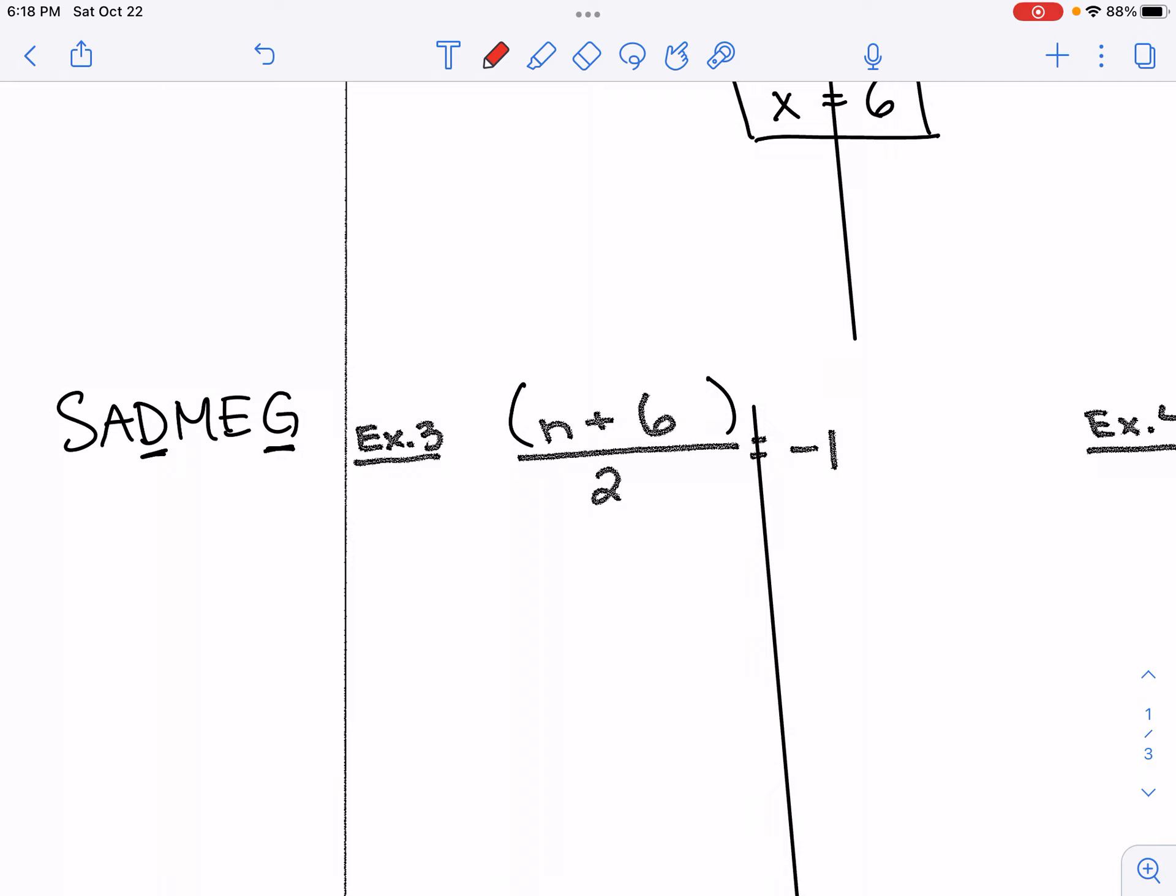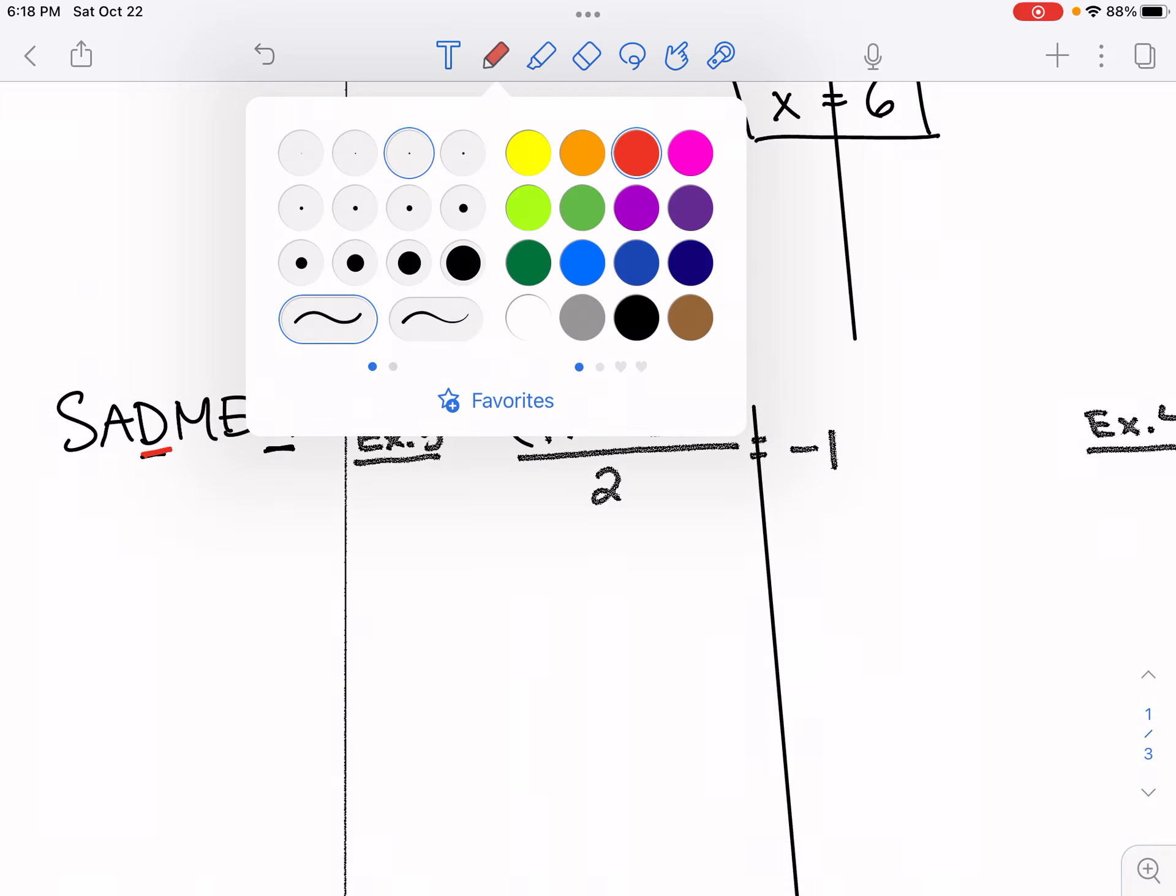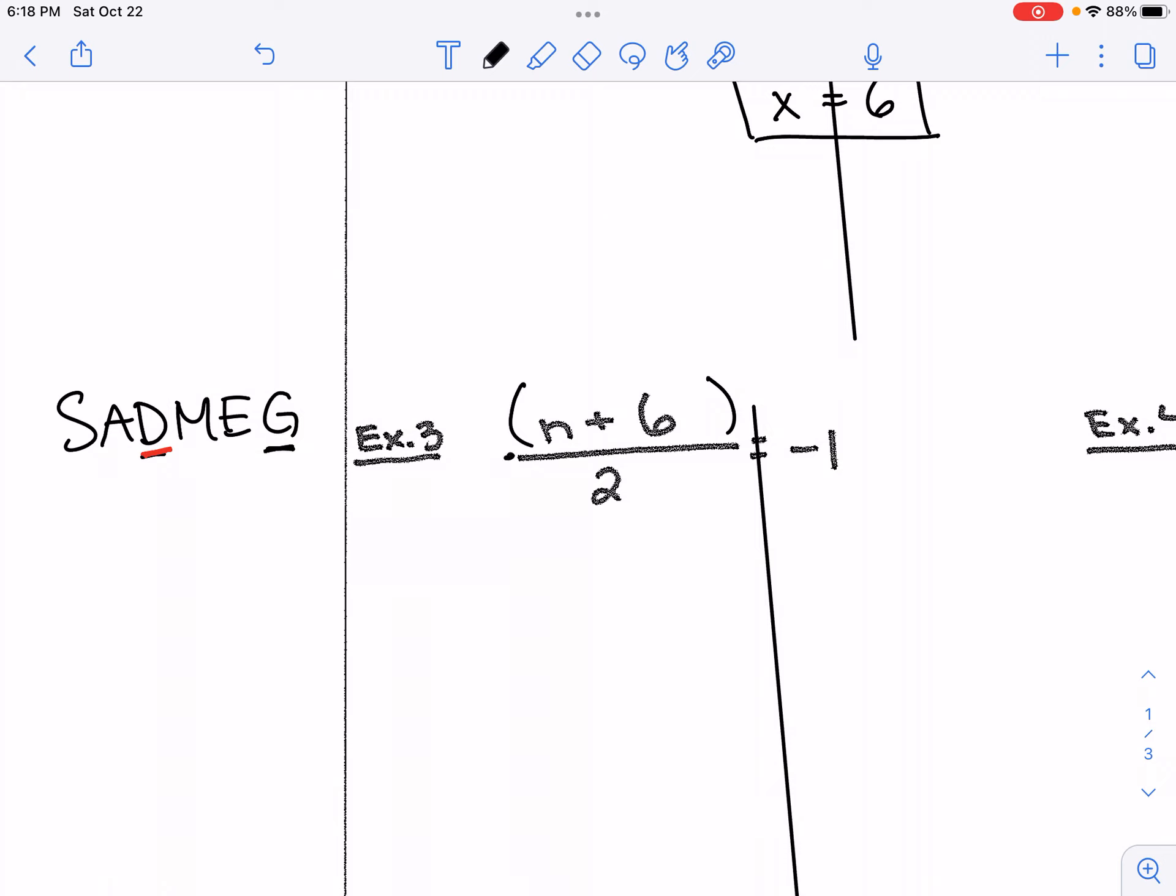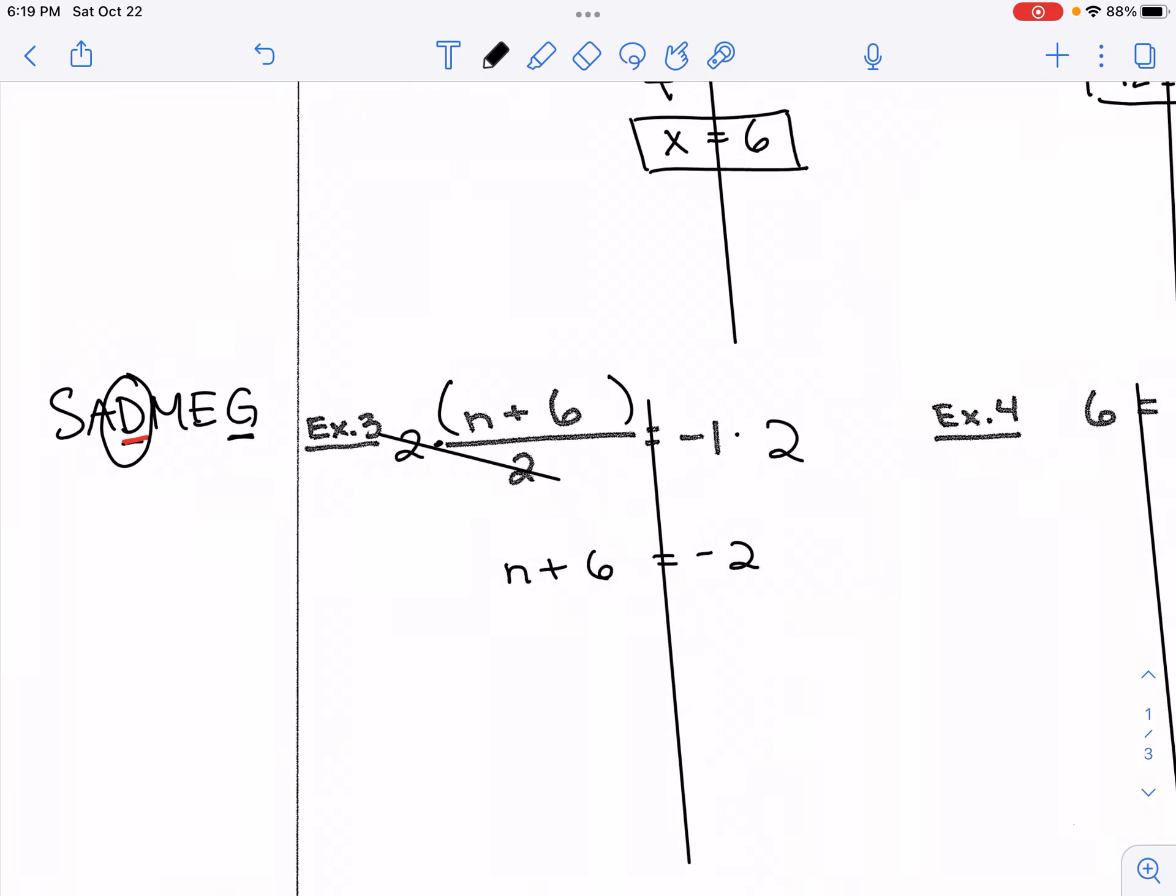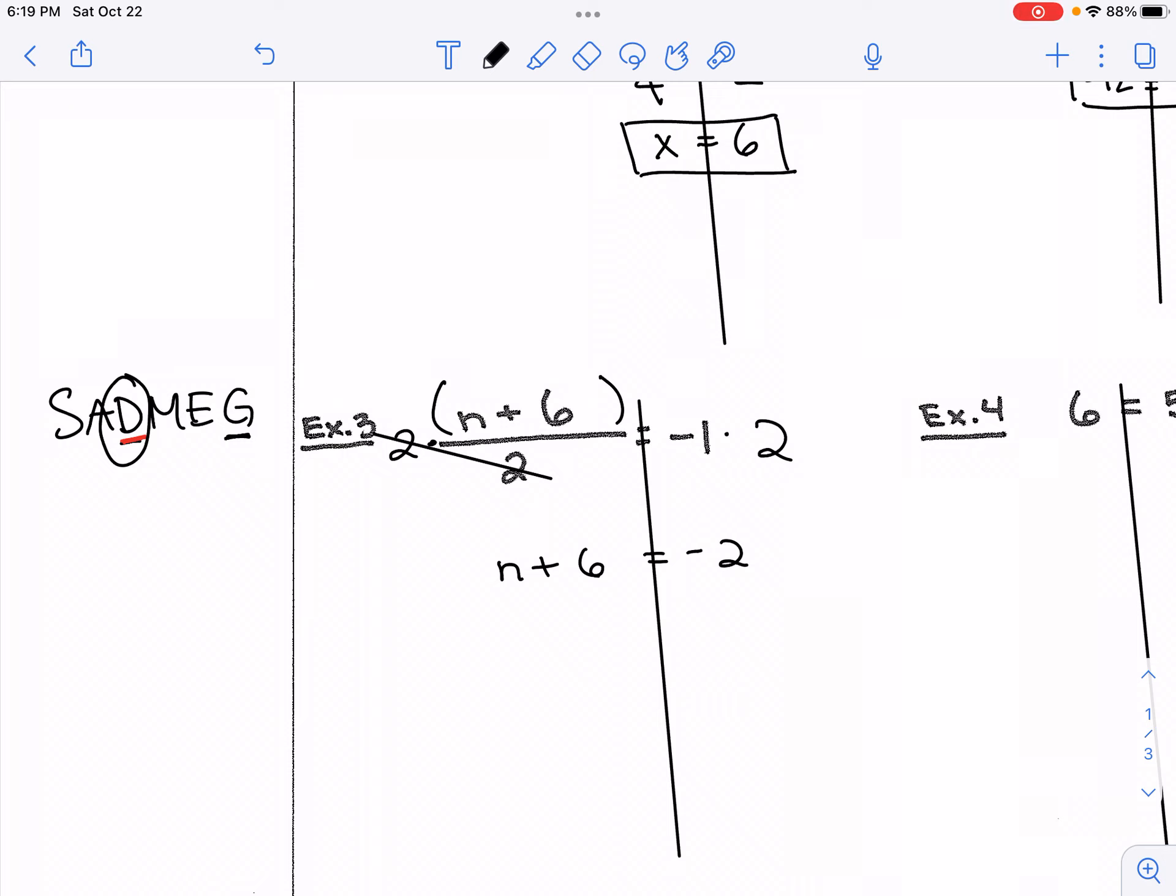We're going to get rid of this fraction by first undoing division. So instead of dividing by 2, we're going to multiply both sides by 2. And as you can see with this, the 2s will go away, we're just left with n plus 6 equal to, the left side will be equal to negative 2. By multiplying both sides by 2, we got rid of the fraction, and now we're left with the numerator, that group. And in that group it is adding 6, so we can ask ourselves what's the opposite of adding 6? It's subtracting.